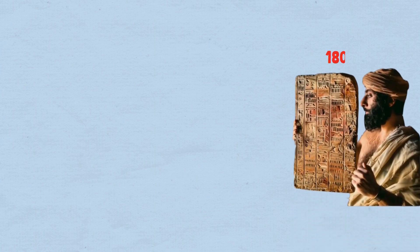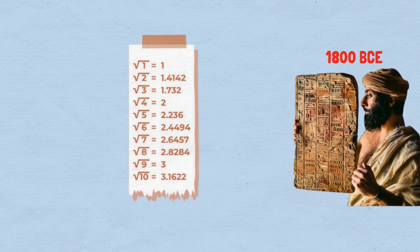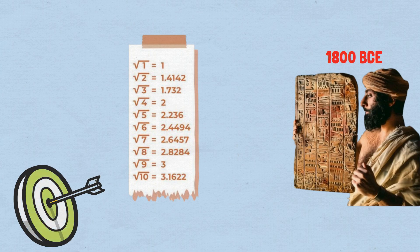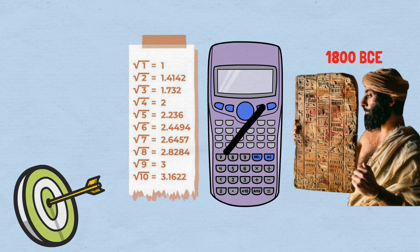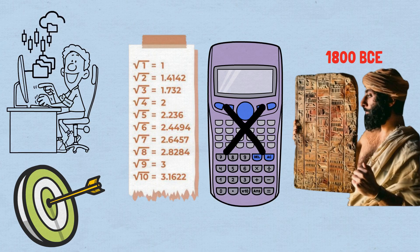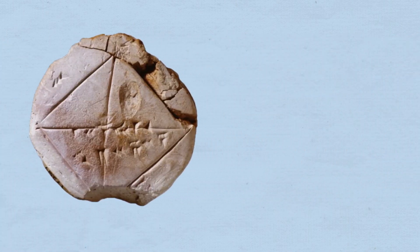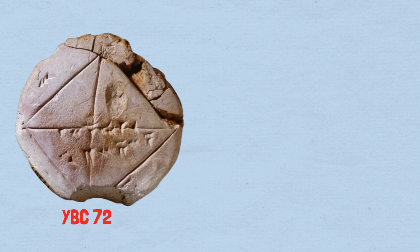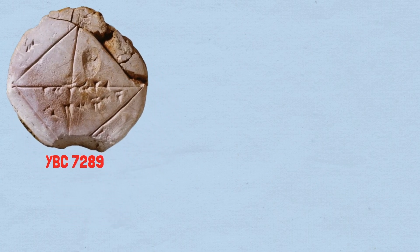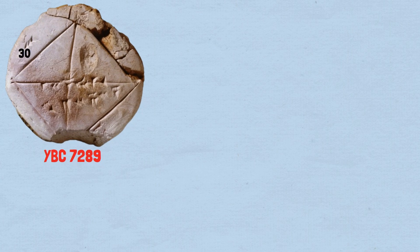Ancient Babylonian mathematicians working around 1800 BCE developed a method for calculating square roots that achieved remarkable accuracy without any modern computational tools. Their technique was so sophisticated that it forms the foundation of algorithms used by computers today. The Yale Babylonian Collection contains a clay tablet known as YBC 7289 that demonstrates this computational mastery. The tablet shows cuneiform numbers